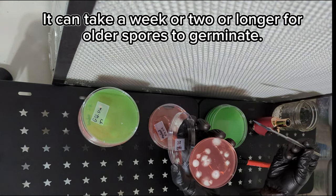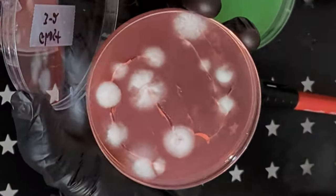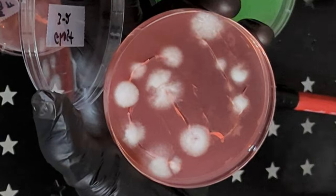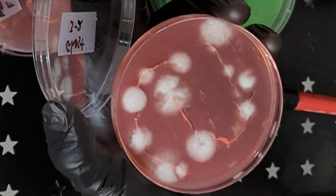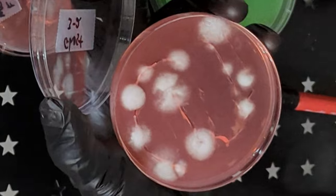So colonization speed is another way to judge whether or not you're working with a clean culture or a contaminant. After other fungus and molds you might run into different contaminants: bacteria.